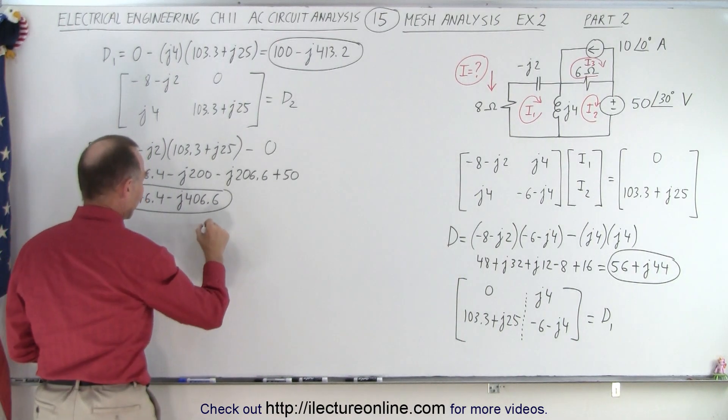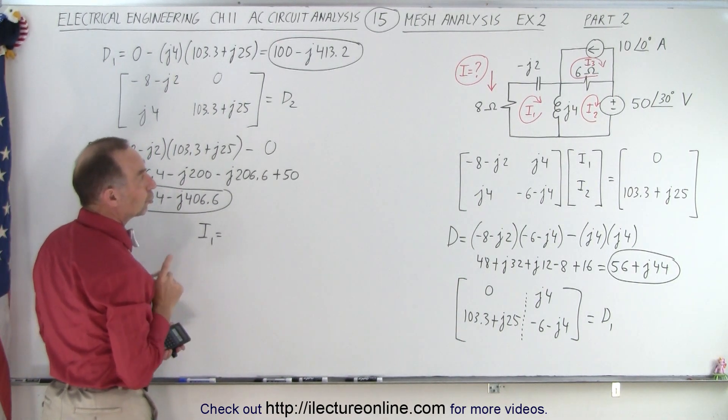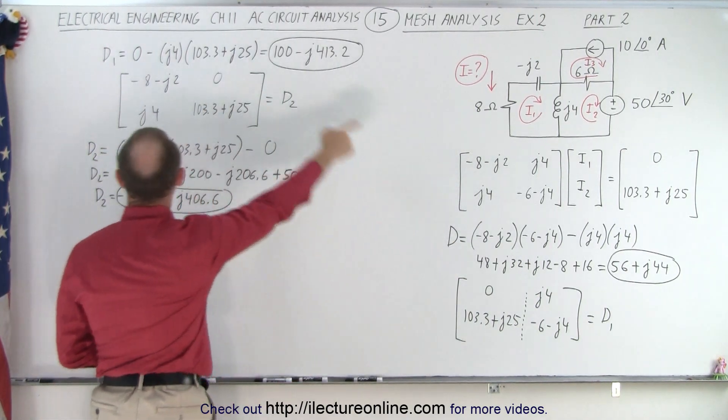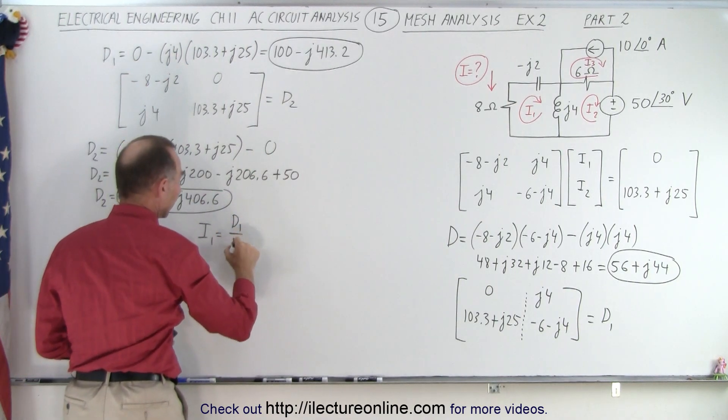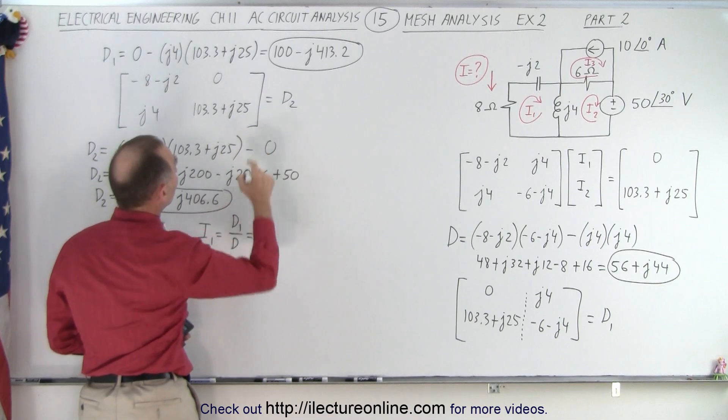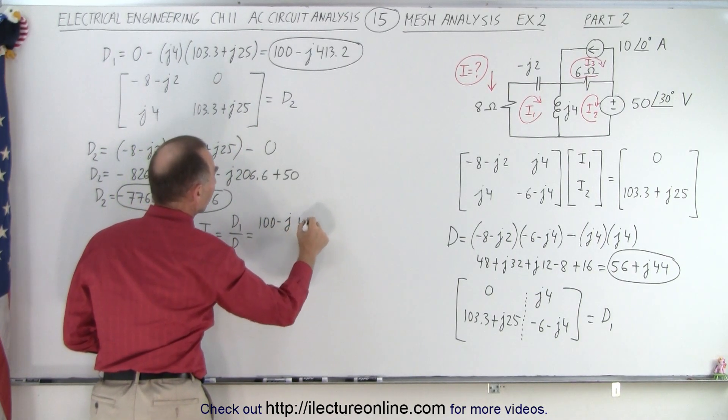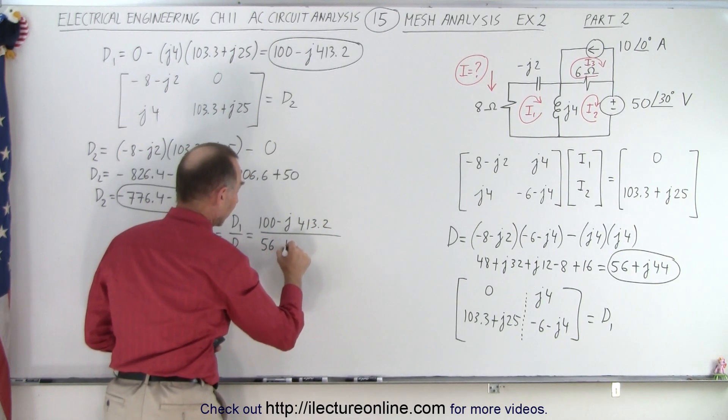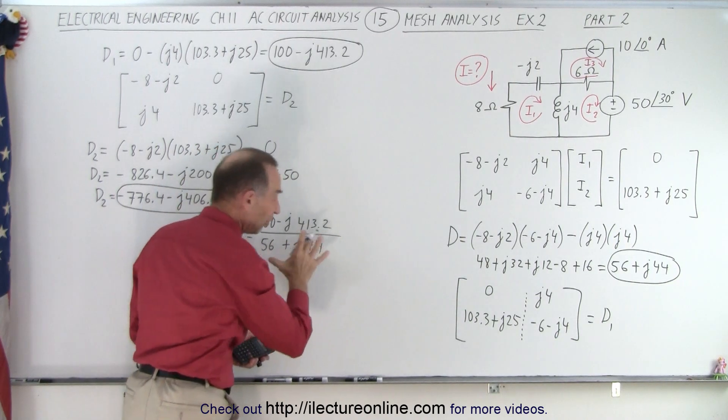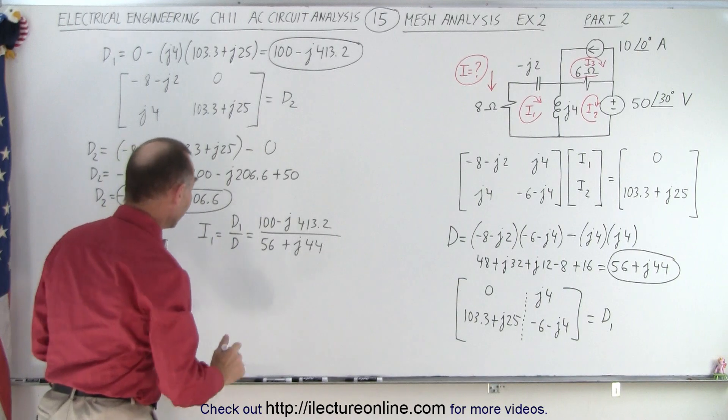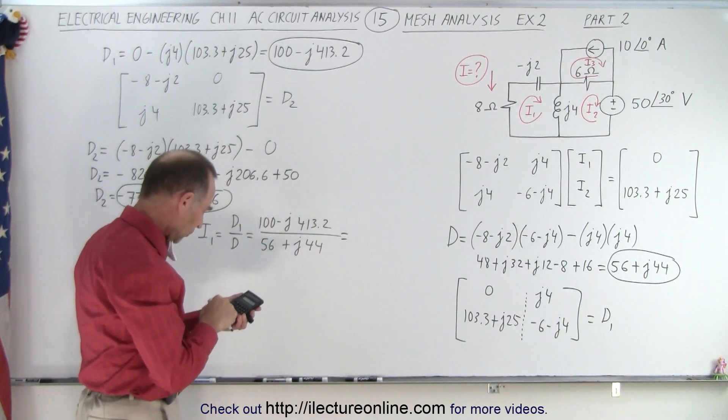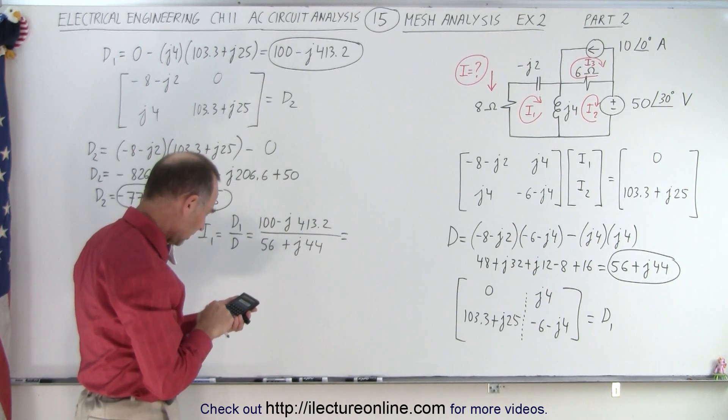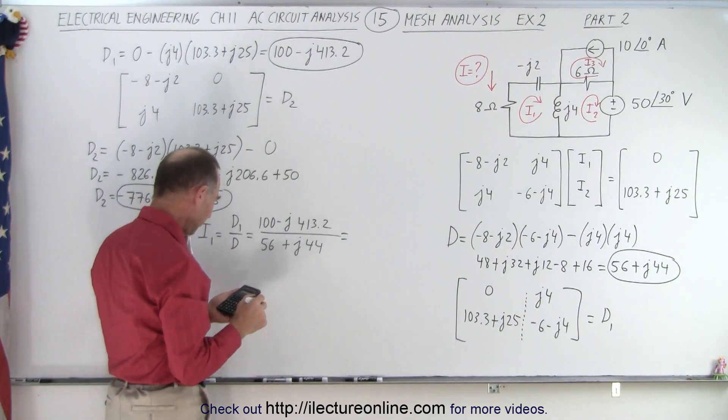Now to find I1. To find I1, that is going to be equal to, by definition, D1 divided by the determinant. So D1 is equal to 100 minus J413.2 and we divide that by D, which is 56 plus J44. Now, of course, what we want to do is convert that to magnitude and angle format. So this is equal to 413.2, we square that, plus 100 squared, which is 10,000. Take the square root of that, we end up at 425.1.